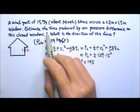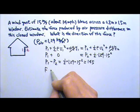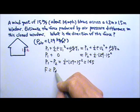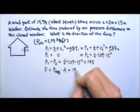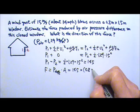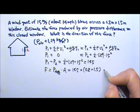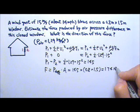What we want is the force produced by air pressure difference. The force is the pressure difference times the area. The pressure difference is 145. The window area is 0.8 times 1.5, so this will give us about 174 newtons.